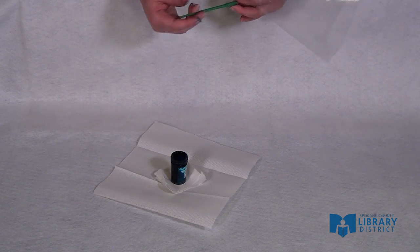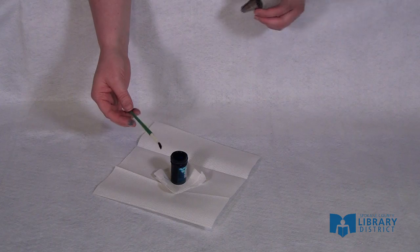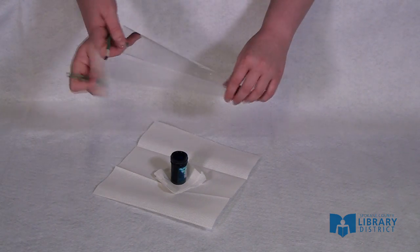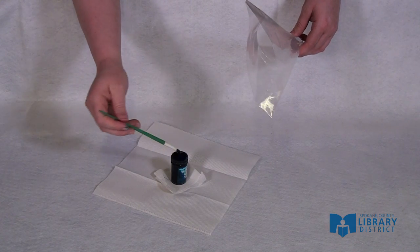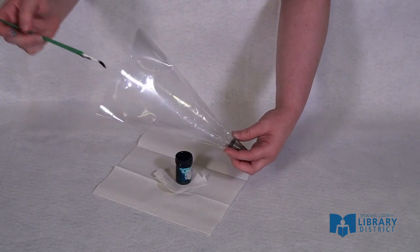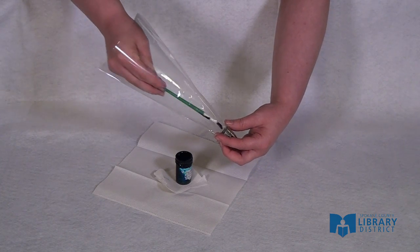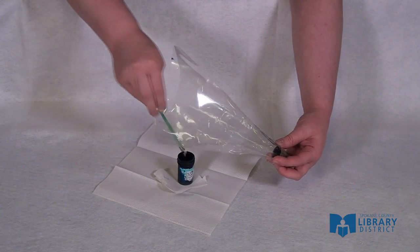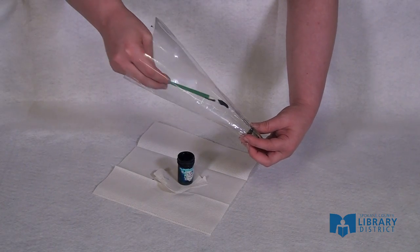First I have my gel paste food coloring, a food safe paintbrush, and my prepared disposable piping bag. So first what I want to do is paint a stripe inside your bag, making sure you go all the way inside the tip there and all the way to the end of your bag so you have one nice even stripe.